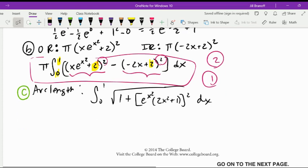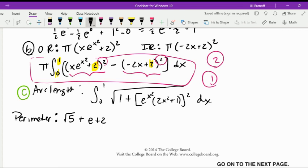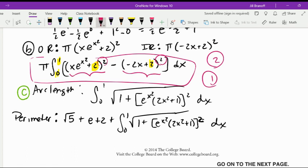So let's pull it all together for our last little statement here. The perimeter would be root of 5 plus e plus 2 plus the arc length integral. You get one point for finding this derivative accurately, one point for your integral, and then one point for your answer, which would be that you included this part as well.